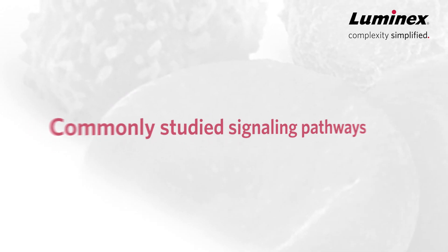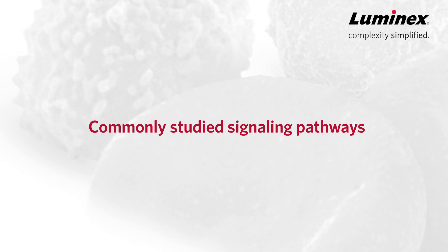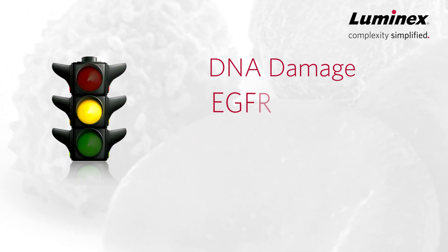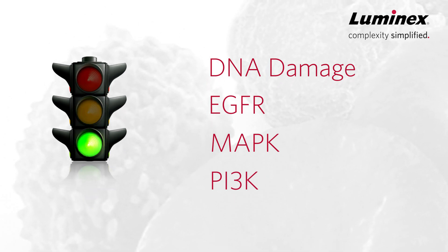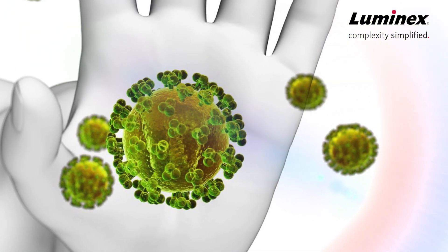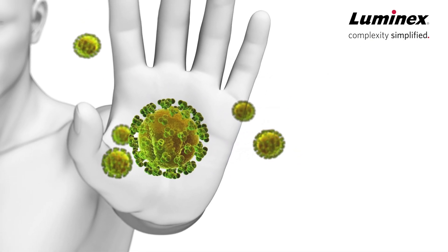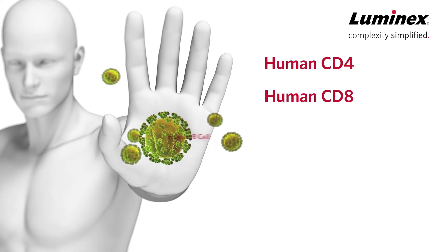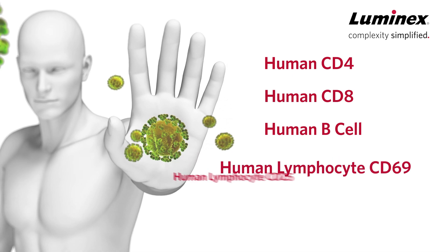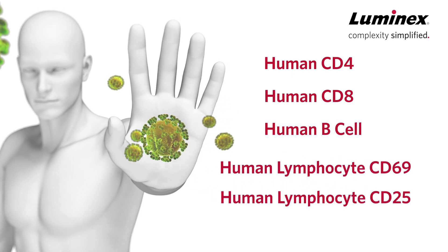Muse assays are also available to study the activation of key targets in some of the most commonly studied signaling pathways, such as MAP kinase and PI3 kinase. With Muse, you can also perform immunology assays without the complexity of open systems, and with no flow expertise needed. Quickly characterize T and B lymphocyte populations in peripheral blood mononuclear cells or whole blood.